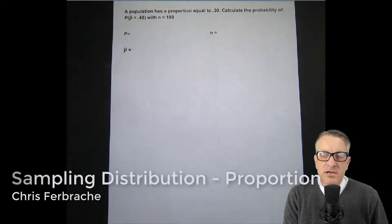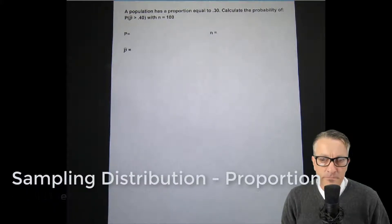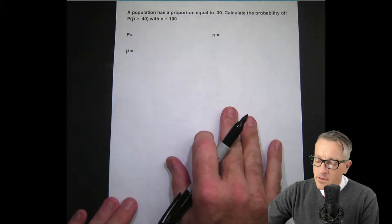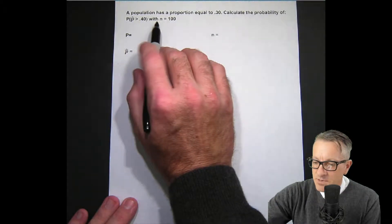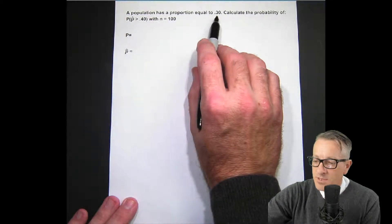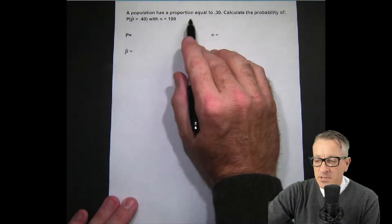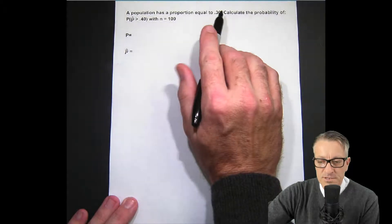Hi, this is Chris Furbushay and I'm going to go over a sampling distribution example using a proportion. Here's the problem: a population has a proportion equal to 0.30. This is essentially our population known proportion.